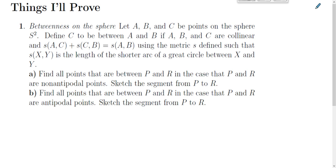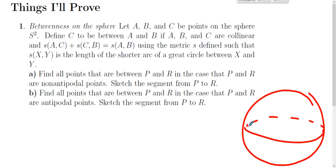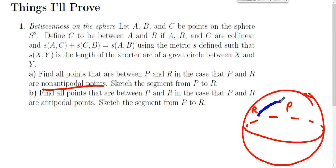You can hit the pause button and read the question. Here's a sphere. In the case that P and R are non-antipodal points — so they're not opposite ends of a diameter of the sphere — there's some point P and some point R. If you consider the great circle through P and R, a circle centered at the center of the sphere passing through P and R, all of the points on that blue segment are between P and R.